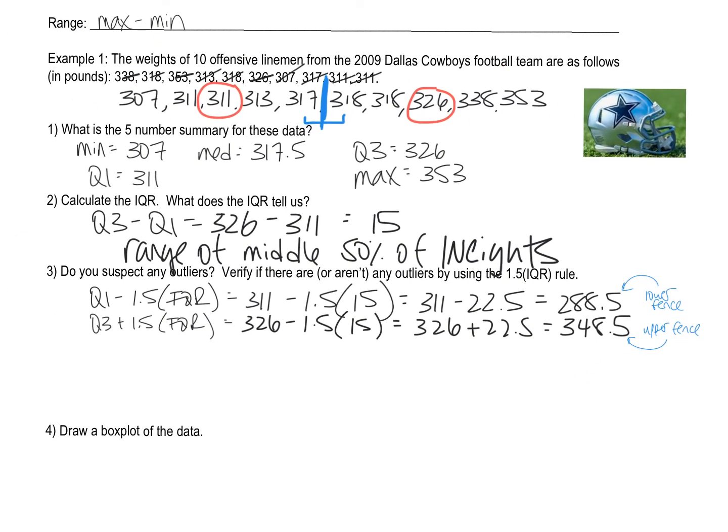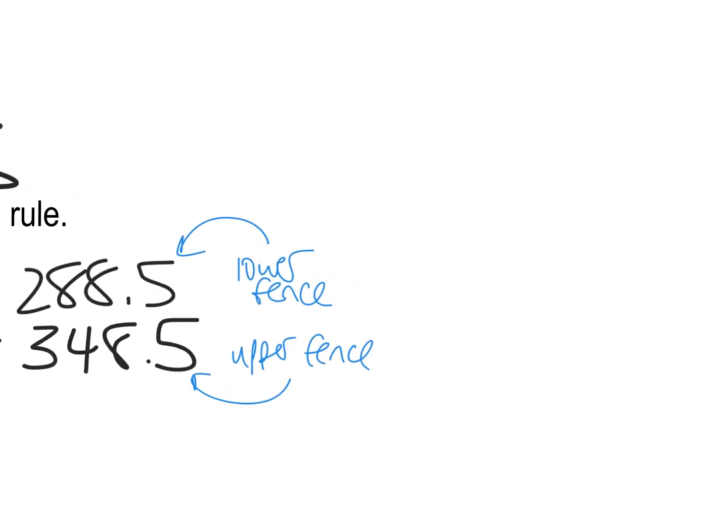So I do not have a lower outlier because my minimum number is 307, but my lower fence is 288.5. There are no dudes up here that weigh less than 288.5. Question is what if they equaled 288.5? That's still not beyond the fence. It's not outside the fence. It's on the fence. So that would not be considered an outlier. It does have to be beyond that number, not equal to that number to be considered an outlier. So I'm going to write no low outliers.